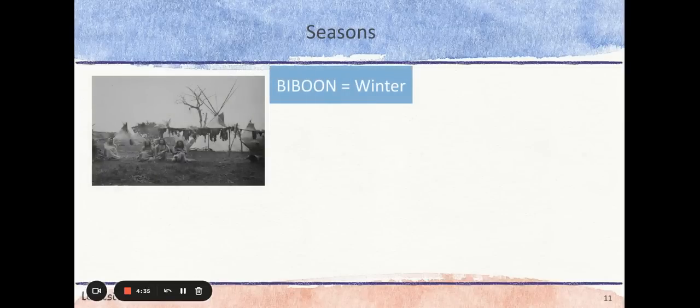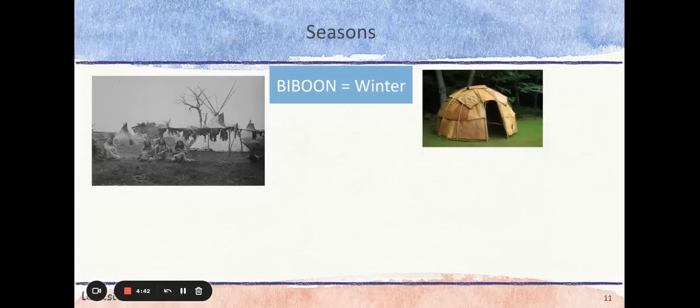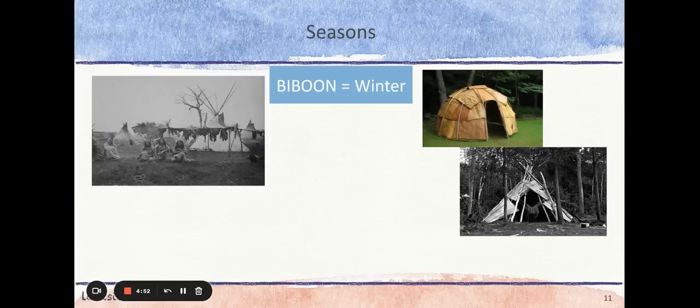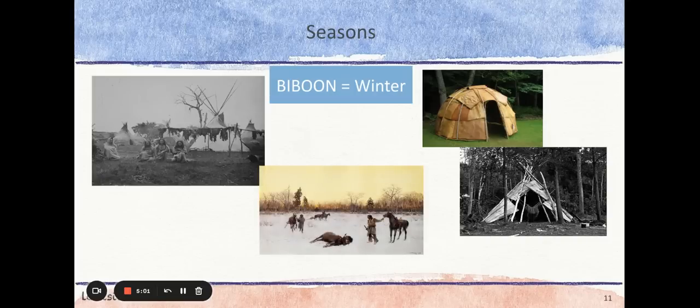Biboon, or winter, was a long and frigid season for the Ojibwe. Food was scarce and the winter was harsh, so families separated into smaller family units. They moved deeper into the woods into smaller wigwams and away from other tribe members. Men who spent most of their time away from the village lived in a smaller, more portable teepee made from sticks and bark.